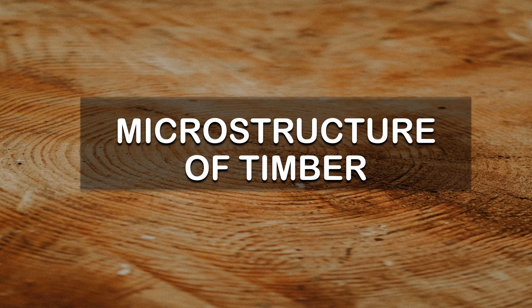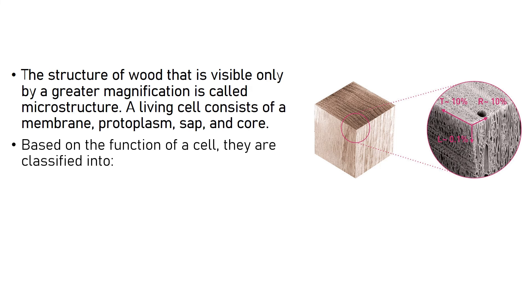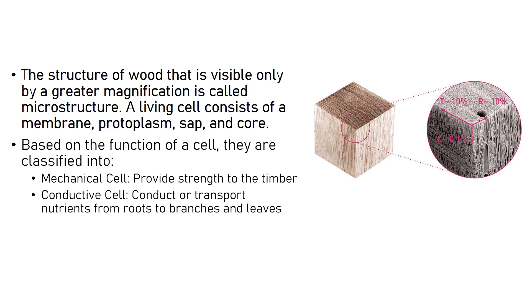Next is the microstructure of timber. The structure of wood that is visible only by greater magnification is what we call the microstructure of timber. A living cell consists of a membrane, a protoplasm, sap, and core. Based on the function of a cell, they can be classified into mechanical cells, conductive cells, and storage cells. Mechanical cells provide strength to the timber, conductive cells transport nutrients from the roots to the branches and leaves, and storage cells are responsible for storing and transmitting nutrients.